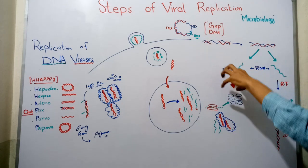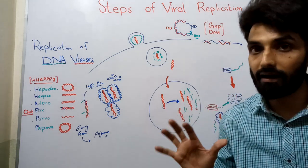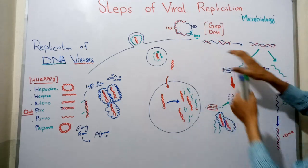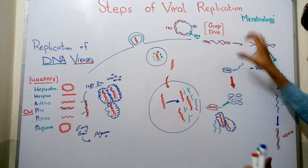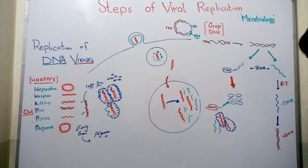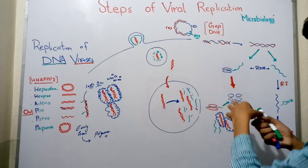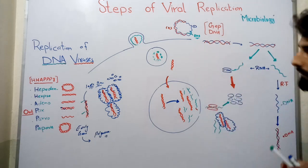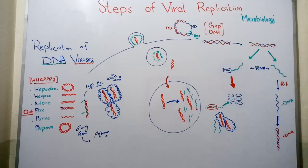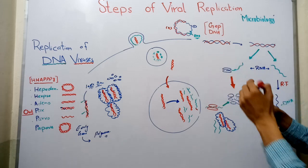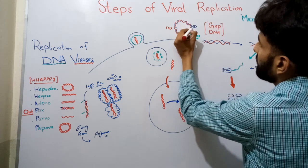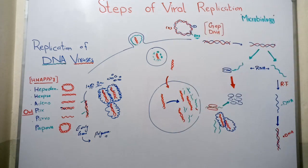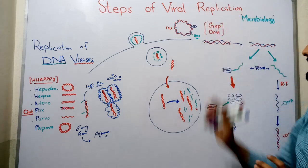When hepatitis B virus enters the host cell like a hepatocyte, the first thing that happens is this gap will be completed by the enzyme DNA polymerase. Hepatitis B virus is basically a circular virus, though I will show it in a linear method for clarity. After the gap is completed, this DNA is now called covalently closed circular DNA. The RNA is removed from it and now this is a complete double-stranded DNA with the gap filled.